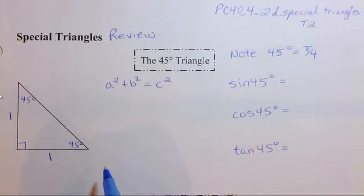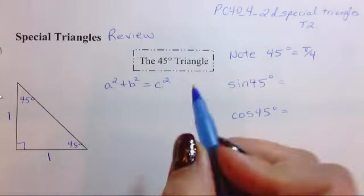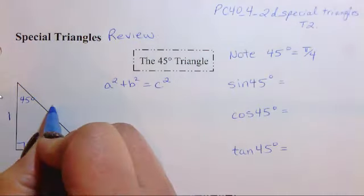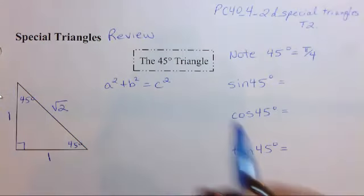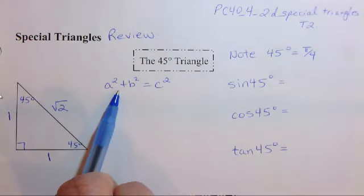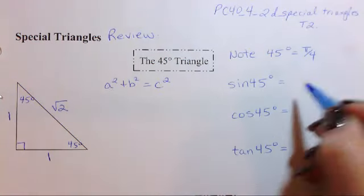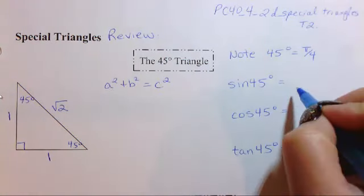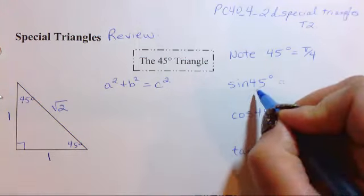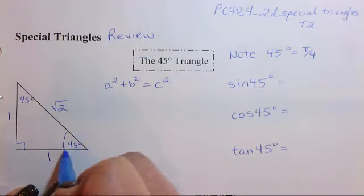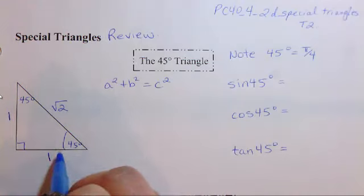So when we do this we get that this length here is the square root of 2. Now you can prove that to yourself using Pythagorean theorem here and work through it, but I just want to run through this pretty quickly.